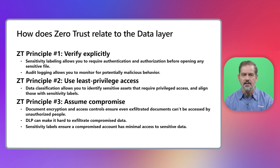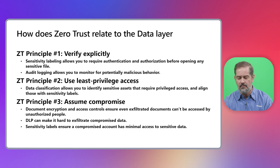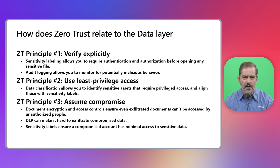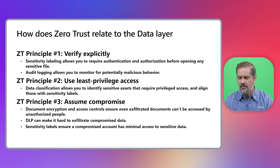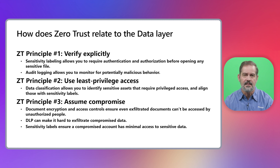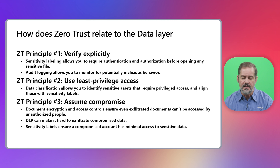The third principle in Zero Trust is to assume compromise — assume that the worst will happen, that somebody will enter your company, grab a bunch of data, and try to send it out. Sensitivity labels help here because even if somebody grabs a folder full of sensitive files and sends it out of the organization, those files remain encrypted after exfiltration and still require user credentials to access. Just grabbing and taking the data out is not enough — you need to compromise credentials and continue impersonating those users, and if the exfiltration is detected, the data can be revoked.